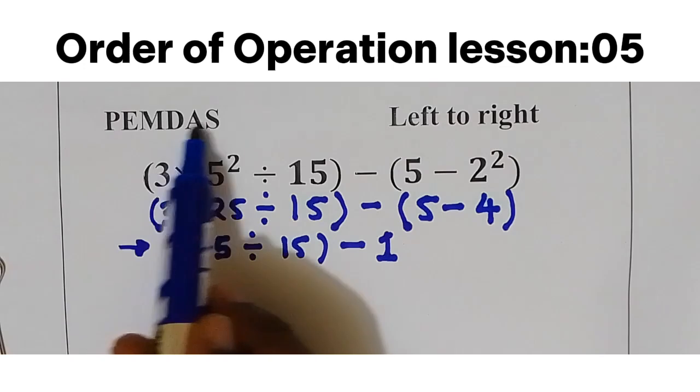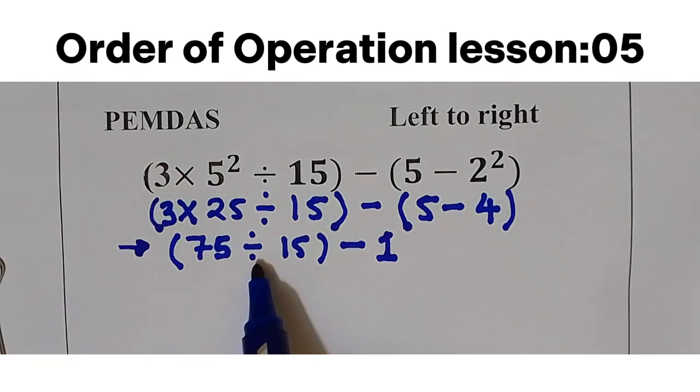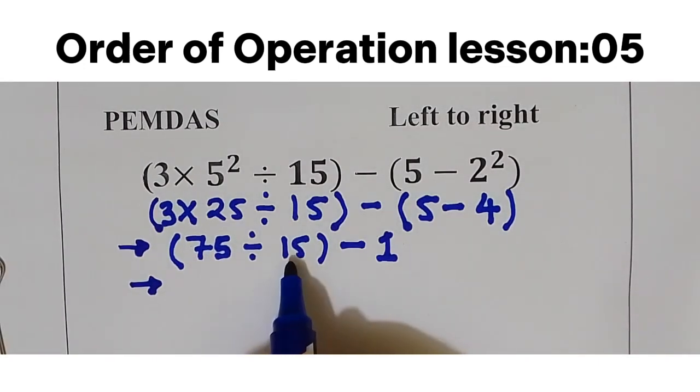Let's go again to PEMDAS. Already we have done with multiplication, we have only division here, so next we are going to do division from left to right. That is 75 divide by 15, we are going to get 5.